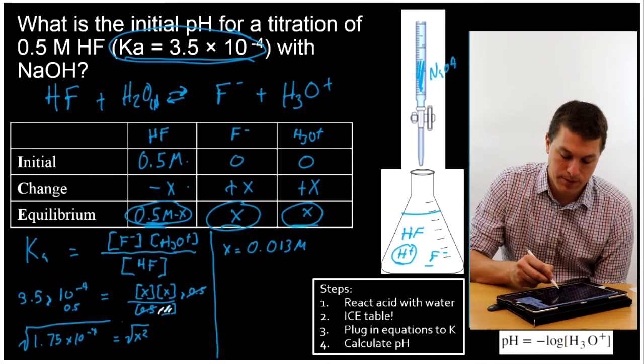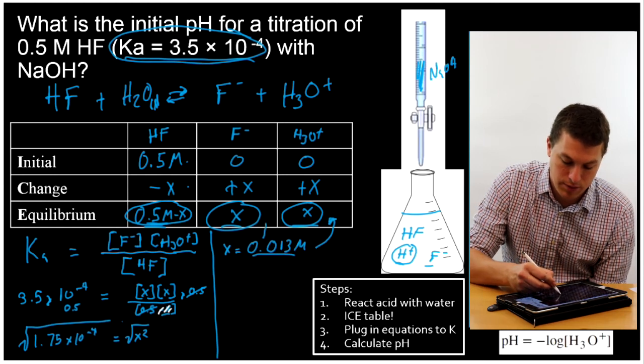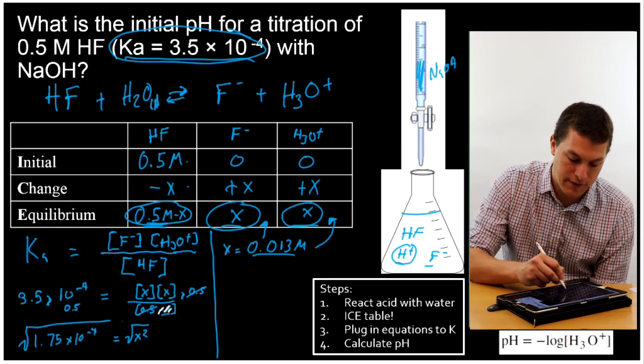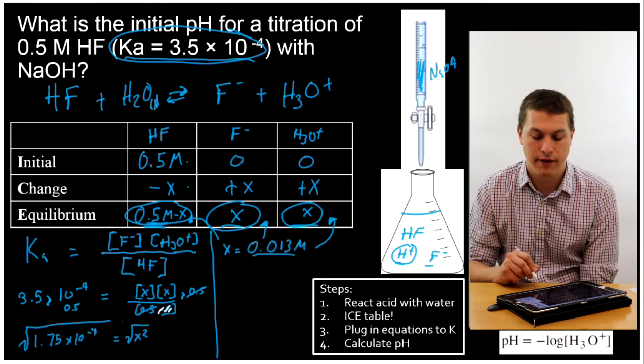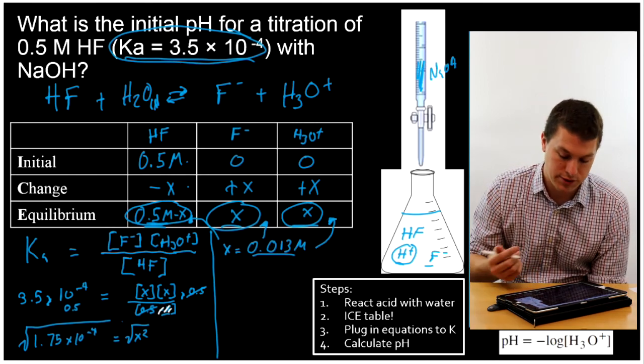Now what is that X telling me? Well, that's telling me the equilibrium concentration of H3O+, the equilibrium concentration of F-, and if I subtract it from 0.5, the equilibrium concentration of HF. So that is my equilibrium concentration. That's the key I need to get all of my equilibrium concentrations.